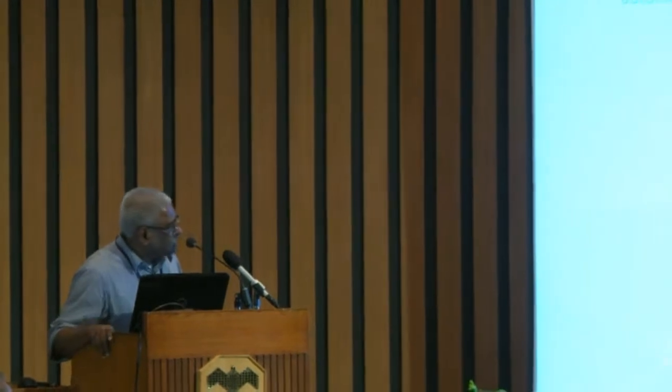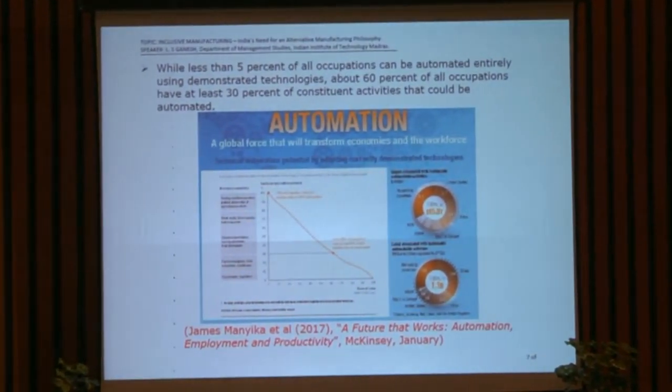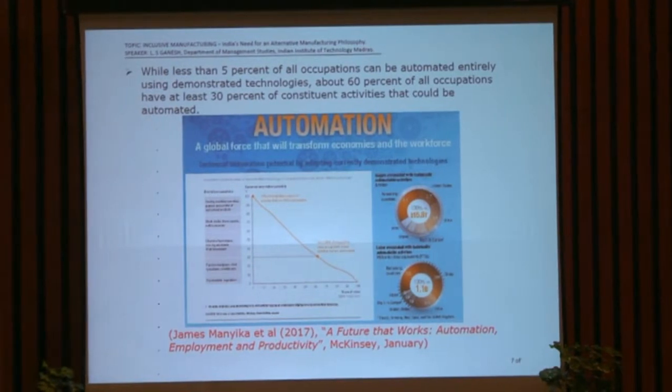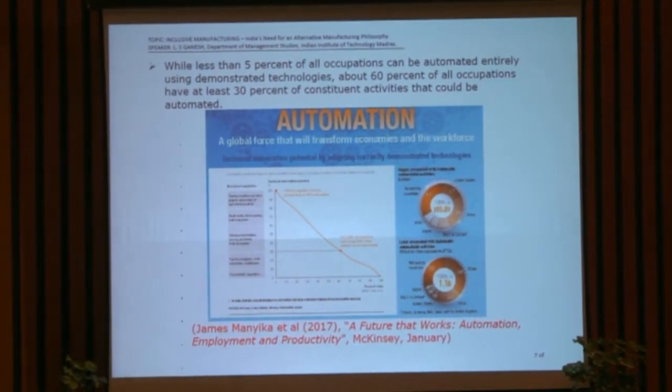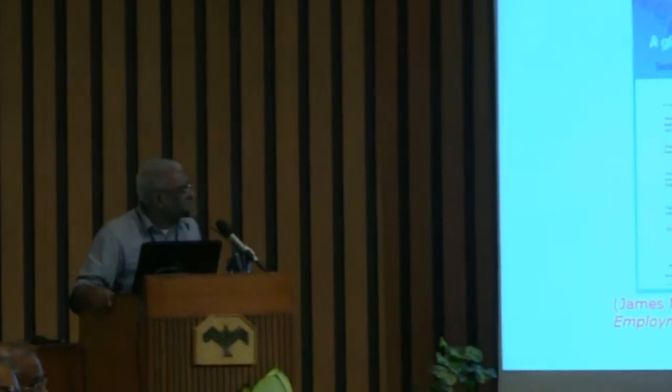The McKinsey report goes down to activity and process levels. In their first exhibit, the graph on the left shows the percentage of roles that can be automated by occupation. The gray-shaded column identifies specific occupations ready for automation to certain extents. While less than 5% of all occupations can be automated entirely using demonstrated technologies, about 60% of all occupations have at least 30% of constituent activities that could be automated.